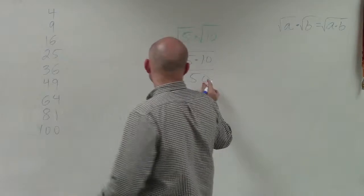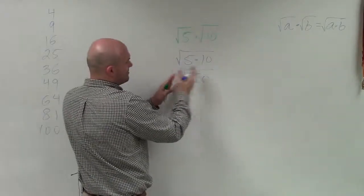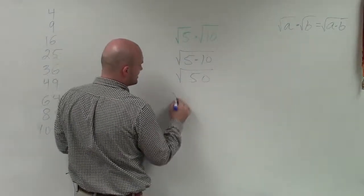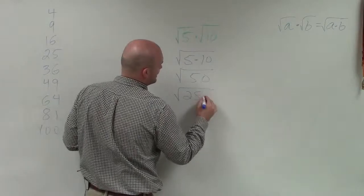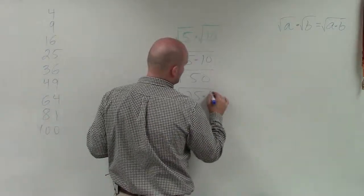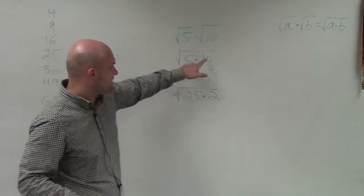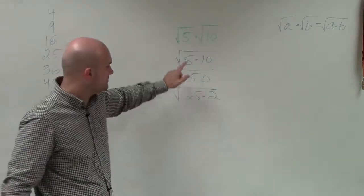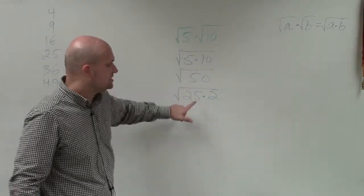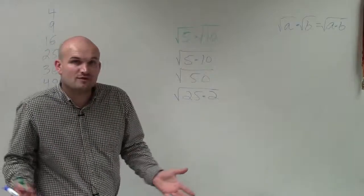So I can now rewrite this. Even though I multiplied them, now I'm going to rewrite this as a product of 25 times 2. Hopefully you can agree that 5 times 10 equals 50, which equals 25 times 2. It's just different ways of writing them.